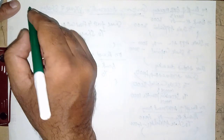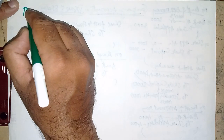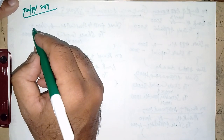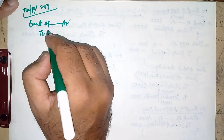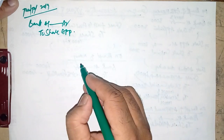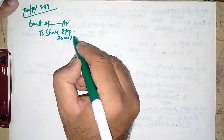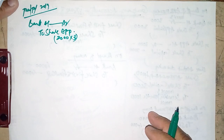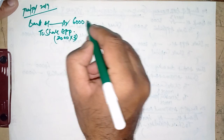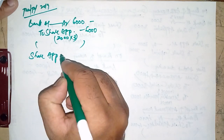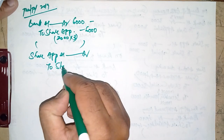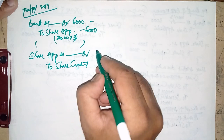This was the June/July 2019 paper, a short four-mark question. The first entry: Bank Account Dr. to Share Application — 2000 shares × ₹3 = ₹6000. Then: Share Application Dr. to Share Capital — ₹6000.